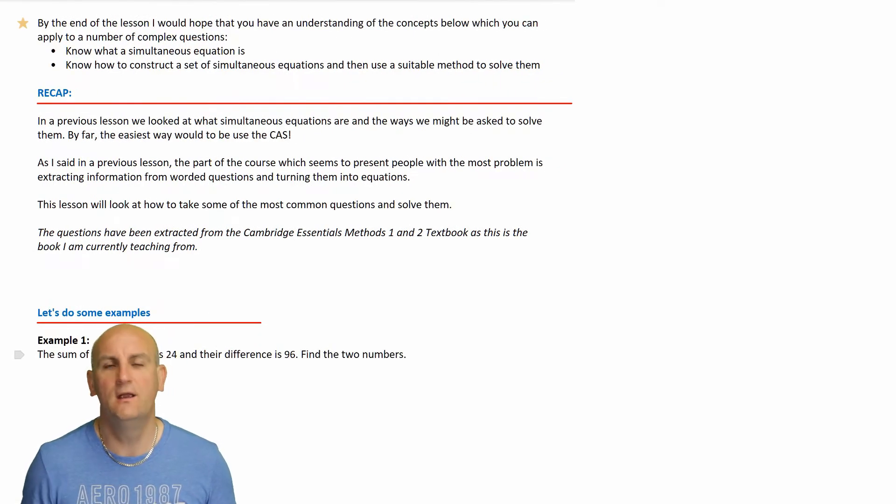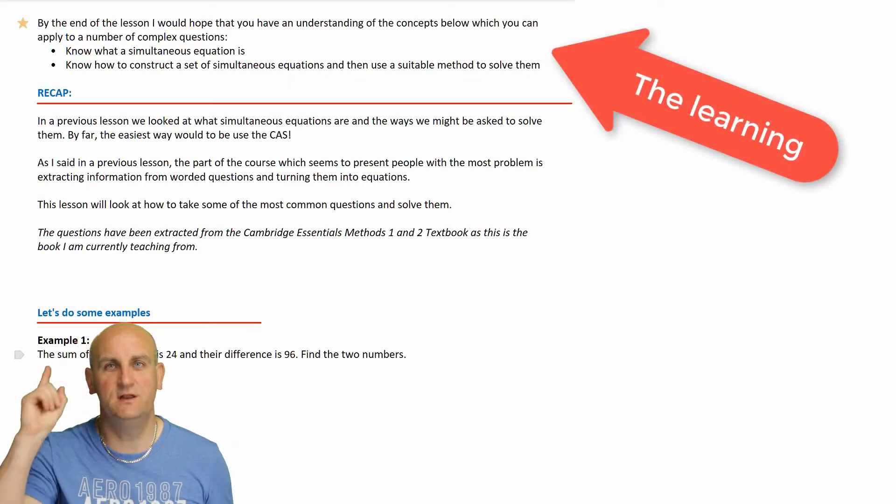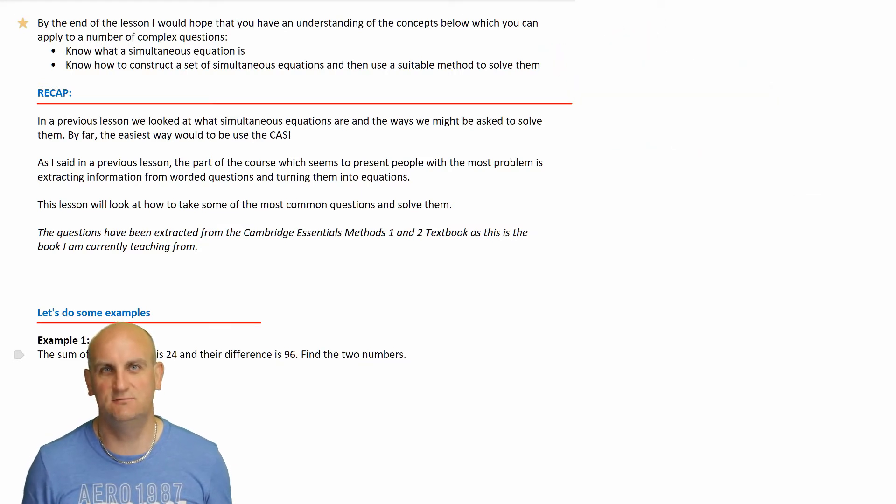By the end of this lesson, hopefully you know what simultaneous equations are. If you don't, there is a video loading up there which is the previous video in this series. Basically, simultaneous equations are a way of having two equations with two unknowns that we're trying to find the solution to. Now in most cases they are expressed using linear graphs that we're trying to find crossing points, but not always. By the end of this particular lesson we're going to hopefully have you construct sets of linear simultaneous equations and use a suitable method to solve them.